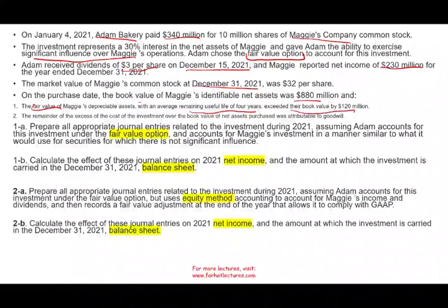On the purchase date, the book value of Maggie's identifiable assets were $880 million, and the fair value of Maggie's depreciable assets — with an average remaining life of four years — exceeded the book value by $120 million. So the fair value of Maggie's company is $1 billion. The remainder of the excess cost over the book value of the net assets was attributable to goodwill.